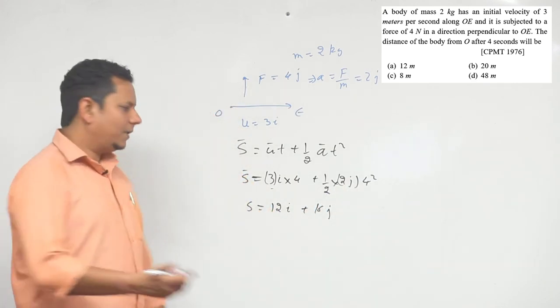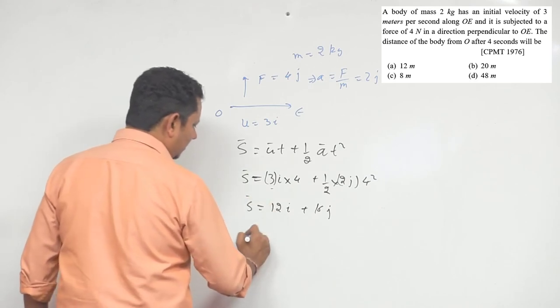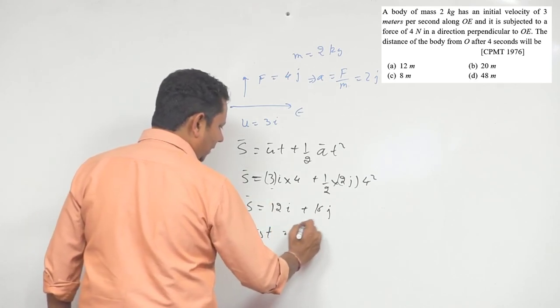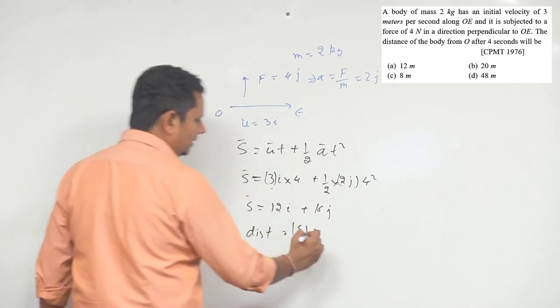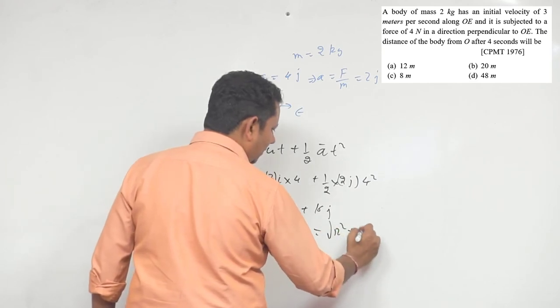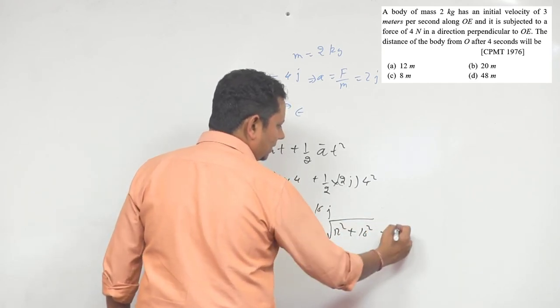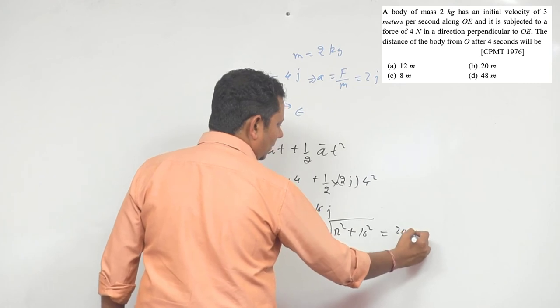So this is our displacement. If we need to find distance, this is displacement. The distance will be equal to magnitude of s, that is 12 squared plus 16 squared, which becomes 20 meter.